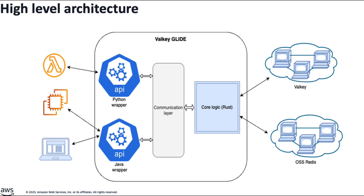Glide's Rust core is based on Redis-RS, a leading Rust Redis OSS client library. We chose Rust for its built-in memory safety features and high-performance capabilities. The Rust core is responsible for communicating with Valky or Redis OSS, covering aspects such as connection handling, topology adjustment, error management, parsing the RESP protocol, and message encapsulation. The language wrappers are designed to be lightweight and serve as language-specific interfaces for the core. The communication layer provides seamless transmission of requests and responses between the core and the wrappers, delivering a uniform interface and consistent client behavior across various programming languages.